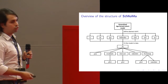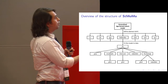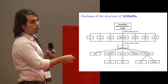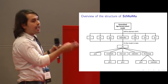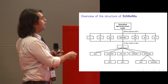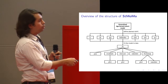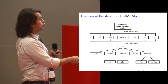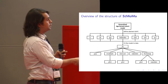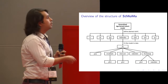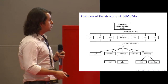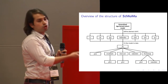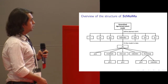StMoMo is based on the generalized age-period-cohort (GAPC) family of models, which I will explain later. You can define an abstract GAPC model using a general function, and there are also predefined functions for the more common stochastic mortality models. Once the model is defined and you have data, you can fit it, plot the parameters, obtain and analyze residuals, compute BICs and AICs, forecast, simulate, and perform bootstrapping to account for parameter uncertainty.